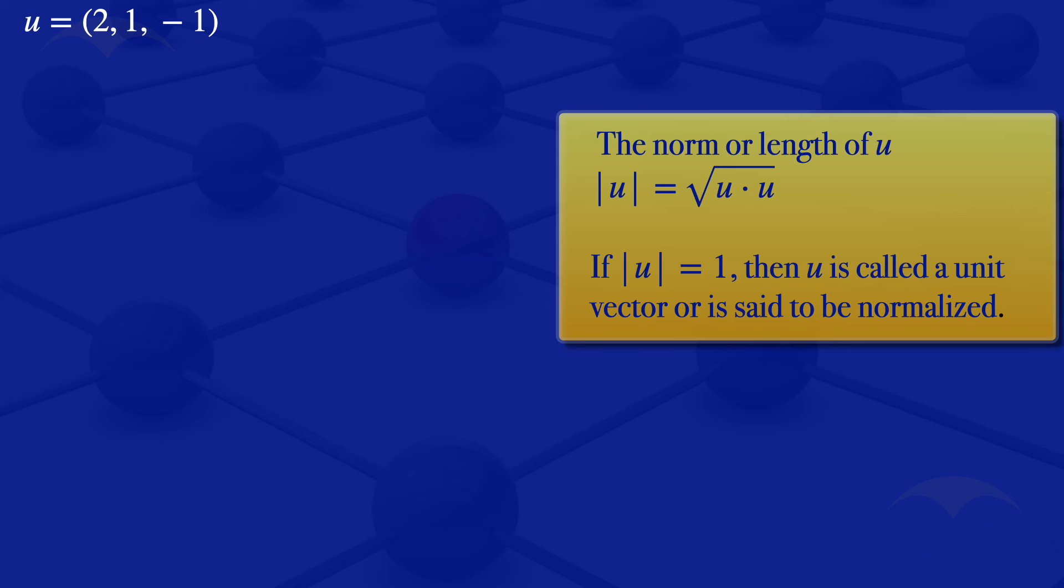In this case, what we want to find is the normalized vector. For us to find the normalized vector, we have to divide that given vector by its norm. So what we're looking for is u divided by the norm of u.